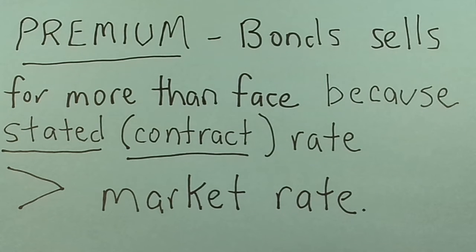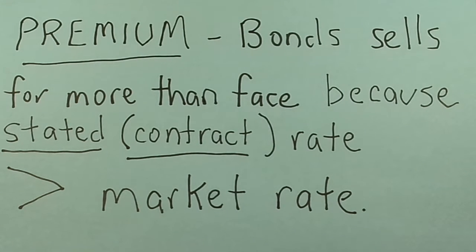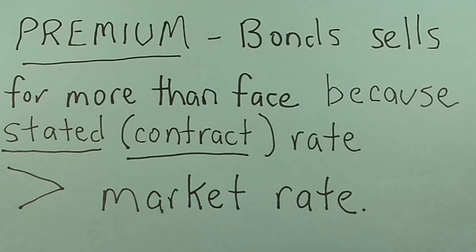What is a premium? A premium is a bond that sells for more than its face value because the market rate is less than the rate stamped on the bond — the stated or contract rate. Remember that the bond is a liability, so our firm is getting ready to borrow money. When we sell this bond, it sells for more than face because the bondholders are going to get paid more interest than the market rate.